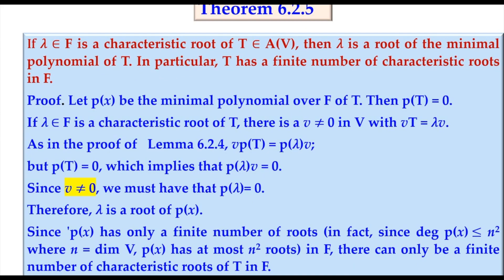Theorem 6.2.5 states: if lambda is a characteristic root of T in A(V), then lambda is a root of the minimal polynomial of T. In particular, T has a finite number of characteristic roots in F. We are going to prove that if lambda is a characteristic root, then lambda must be a root of the minimal polynomial.